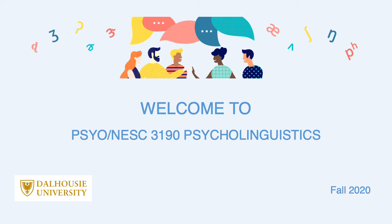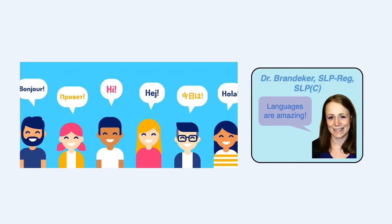Welcome to Psychology Neuroscience 3190, Psycholinguistics, for Fall 2020. This course is for third or fourth year students who are interested in language and communication. The course is taught by me, Myrtha Brandiker.